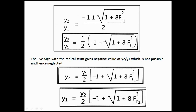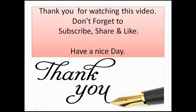Solving this quadratic equation in (y2/y1) using the quadratic formula, we get: y2/y1 = (1/2)·(−1 + √(1 + 8·Fr1²)). Therefore, the relation between conjugate depths is: y2 = (y1/2)·(−1 + √(1 + 8·Fr1²)). This was our aim — to derive the relation between conjugate depths y1 and y2 when a hydraulic jump occurs in a rectangular channel. Thank you for watching; please subscribe, share, and like.